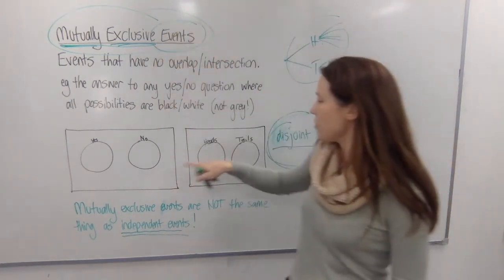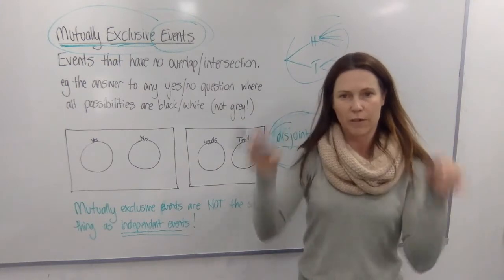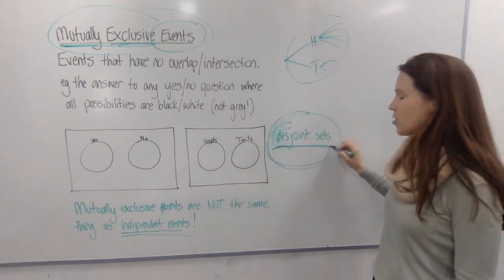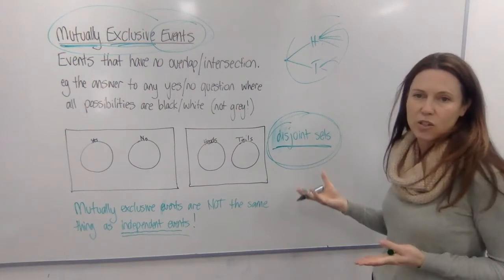So remember mutually exclusive events as the type that you can draw in a Venn diagram and the sets are disjoint sets meaning they just have no overlap.